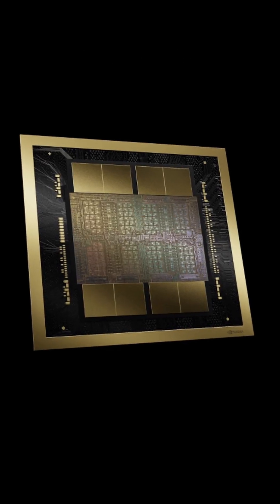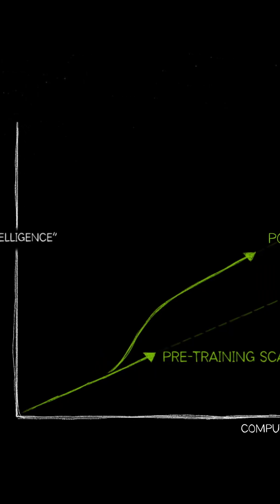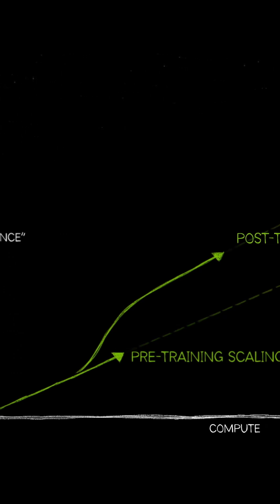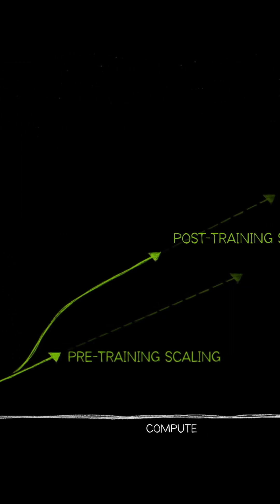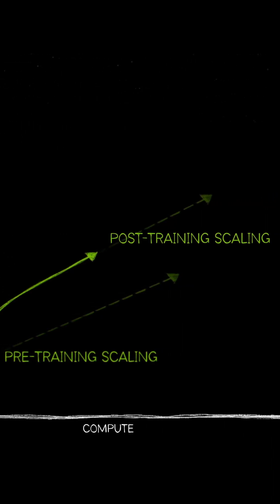Post-training requires an incredible amount of compute. NVIDIA GPUs, networking, and software tools like NeMo Framework and TensorRT Model Optimizer help developers build optimized models that can run efficiently at scale. With post-training, AI models can continue to get better, faster, and smarter for real-world applications.